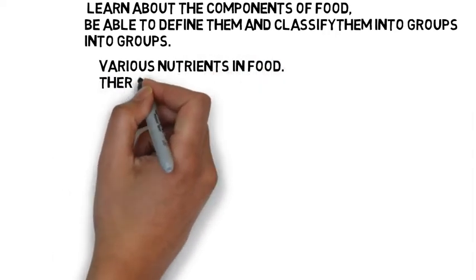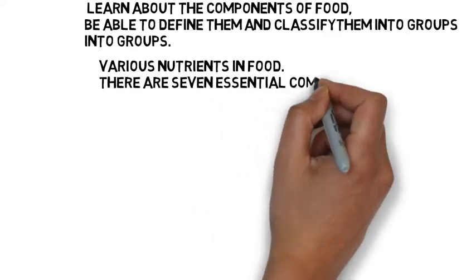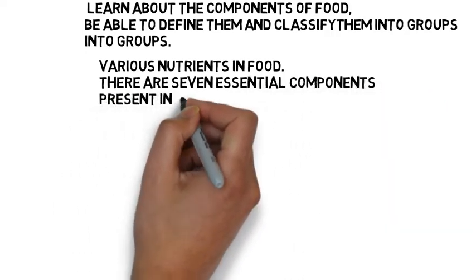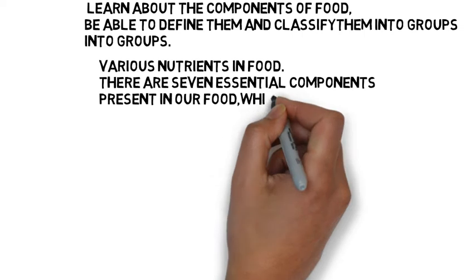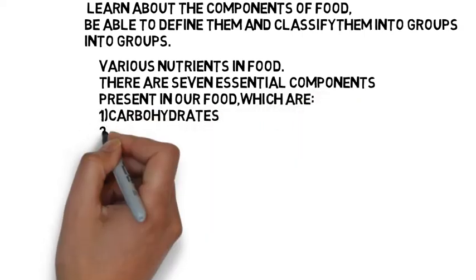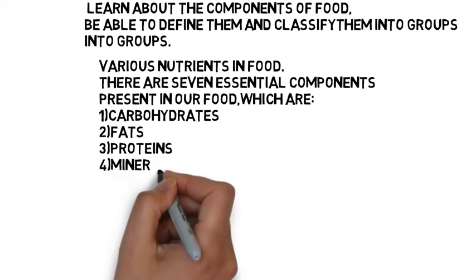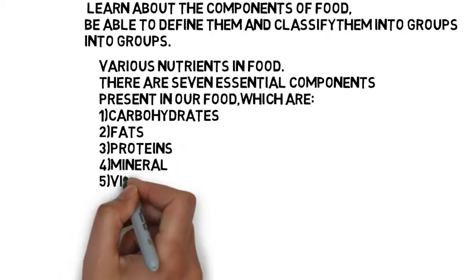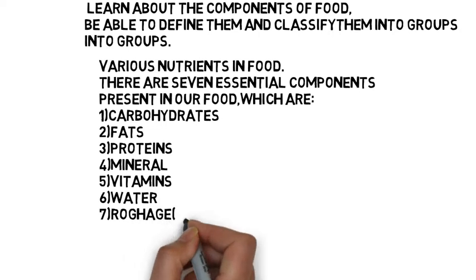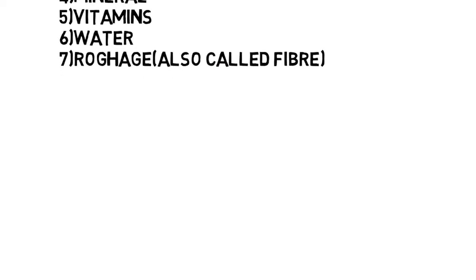There are 7 essential components present in our food: 1. Carbohydrates, 2. Fats, 3. Proteins, 4. Minerals, 5. Vitamins, 6. Water, and 7. Roughage. Roughage is also called fiber.